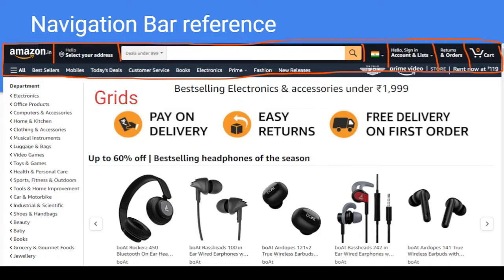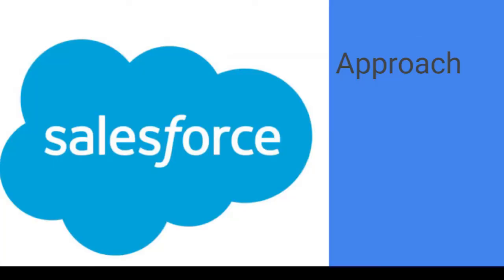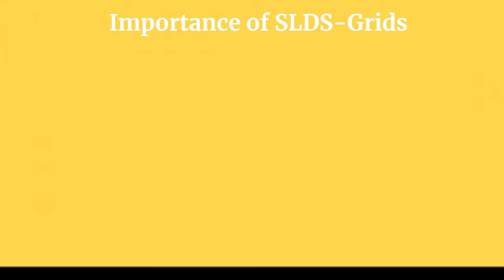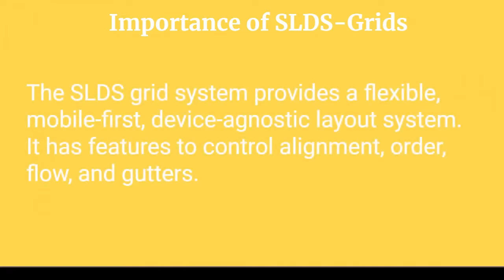Our approach, as discussed earlier, would be SLDS grids. The SLDS grid system provides a flexible, device-agnostic layout system — meaning it is compatible with different device sizes. It has features to control the alignment, order, flow, and gutters. It helps us determine the layout, how things should be placed, and the correct order — for example, five columns on large screens and a single column vertically on small screens.